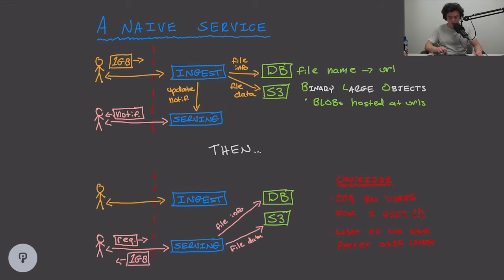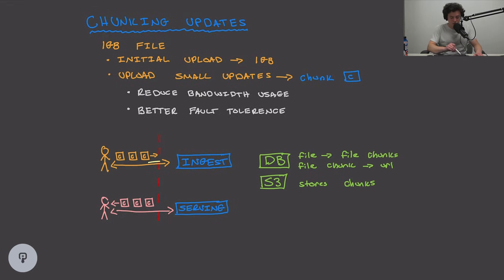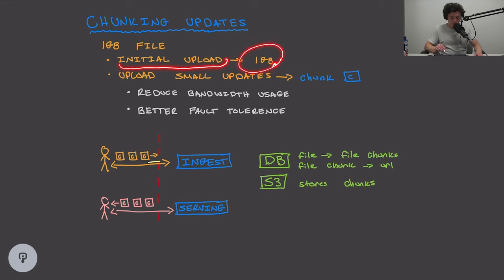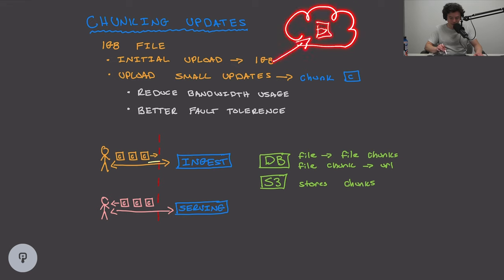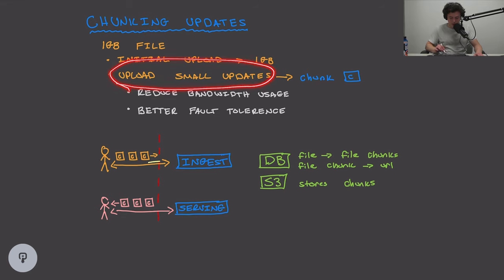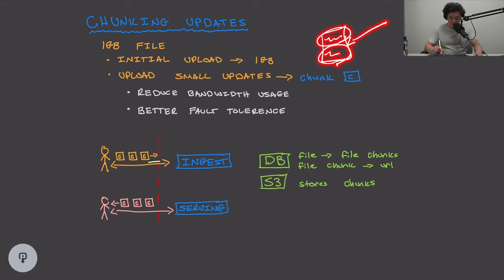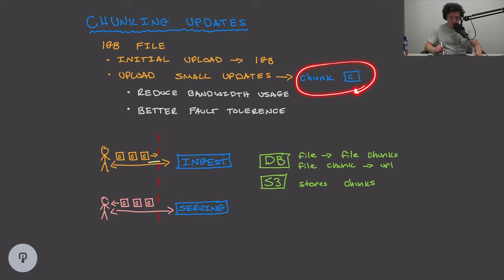To solve this, we introduce chunking updates. We still have our 1 gigabyte file, and the initial upload will still require sending 1 gigabyte. There's no other way to get the file to our cloud service. However, for every subsequent update, we can send only the small changed portion. For example, if only the middle section of the file is modified, that middle portion is a chunk — a small piece of data that has changed.